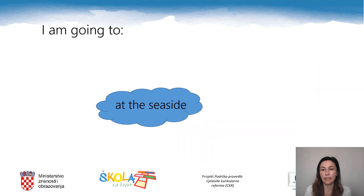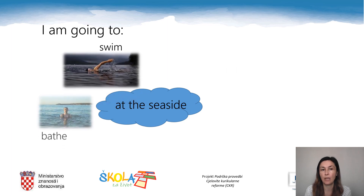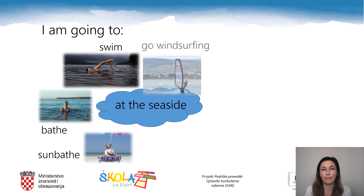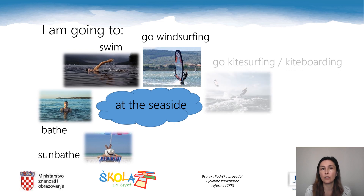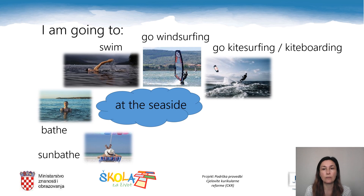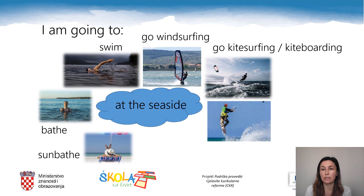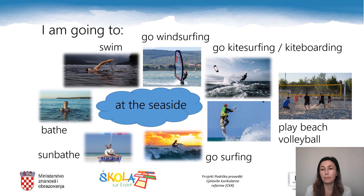If I'm going to spend my summer at the seaside, I'm going to swim, bathe, sunbathe, and go windsurfing. Windsurfing is a sport in which you sail across water by standing on a board and holding onto a large sail. I'm also going to go kitesurfing or kiteboarding — a new sport in which you stand on a board while being pulled by a kite. From 2024, kitesurfing will be a permanent Olympic discipline. I'm also going to play beach volleyball.